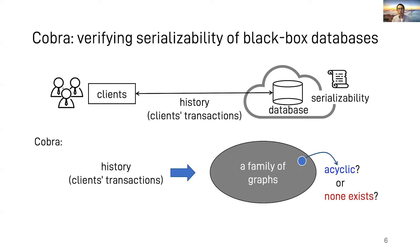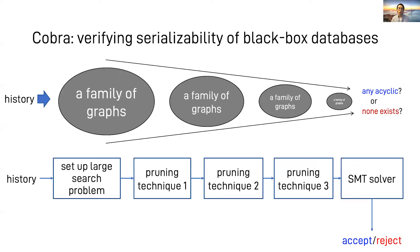A history induces a family of graphs. And the problem of checking serializability is to search for one graph in this family that is acyclic or assert that there's no such graph. But the challenge in practice is that this family is huge. What Cobra does is to systematically narrow the search space by leveraging the semantics of transactions, common patterns we observe in real-world workloads, and hardware acceleration.